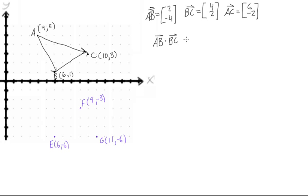And this would equal vector AB [2, -4] dot [4, 2]. And when we take the dot product of this we would find that it's 2 times 4 plus negative 4 times 2, which equals 8 minus 8, which gives us zero.